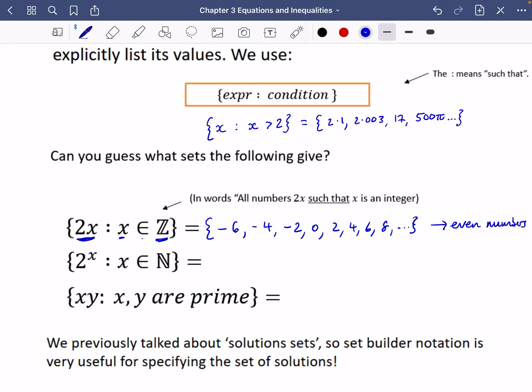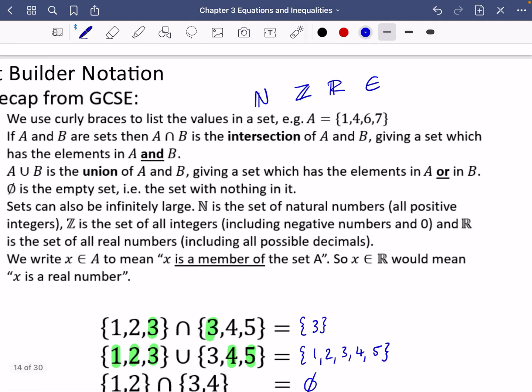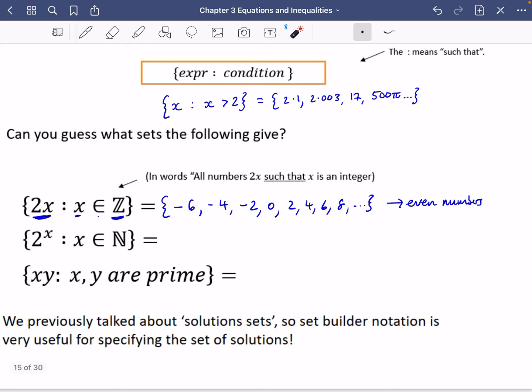This one's a bit different. It says that x is a natural number. Now the natural numbers are all of the positive integers. So this time, we're going to start with the positive integers. Sometimes people think zero is included. Lots of people think it isn't. So I'm going to say it's just going to start with one. So we'd have two to the power of one which is two, two to the power of two which is four, two to the power of three, two to the power of four, two to the power of five. So you can see here that this one is just the set of the powers of two.